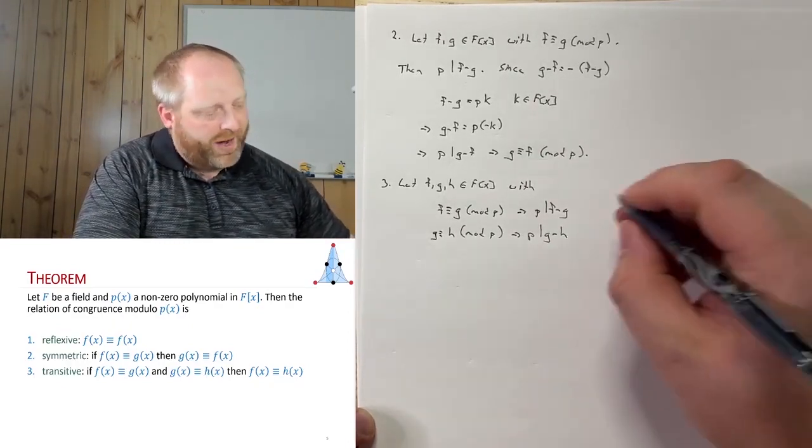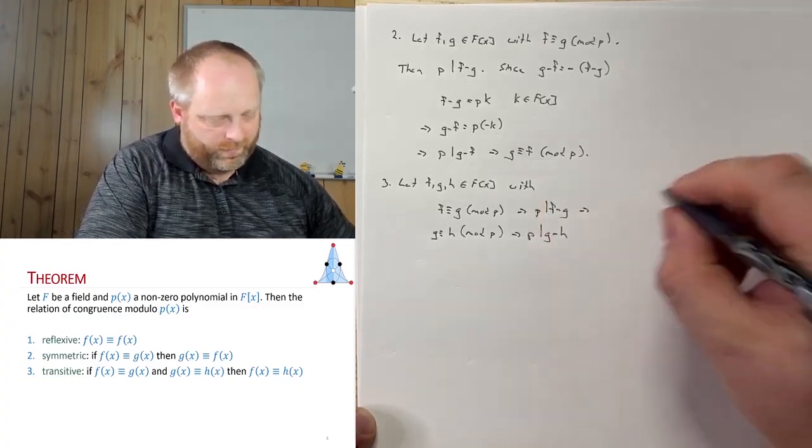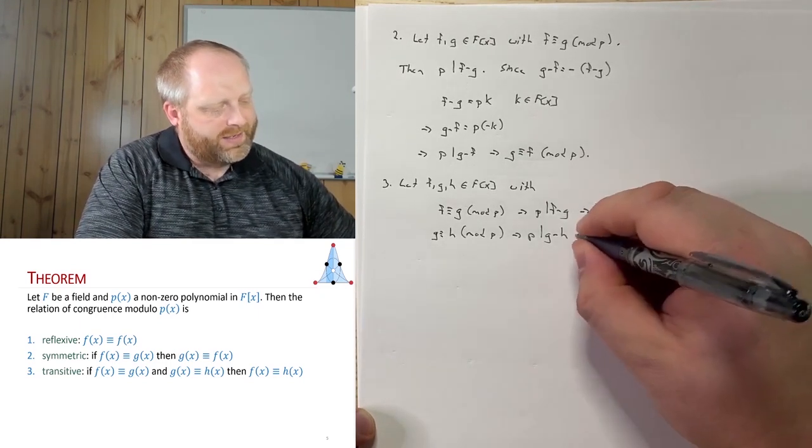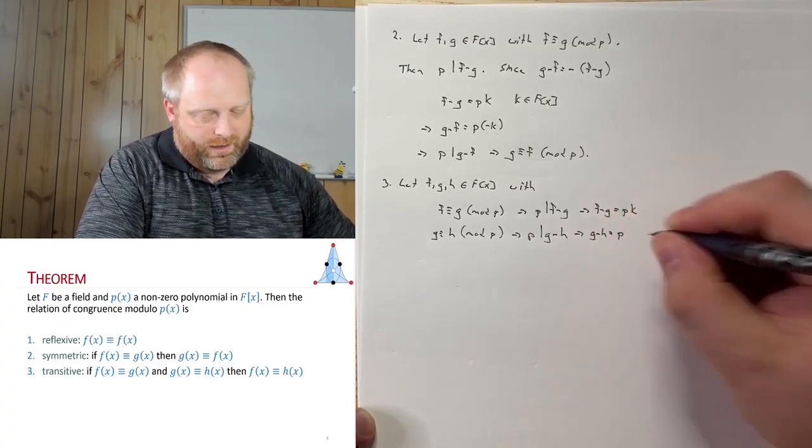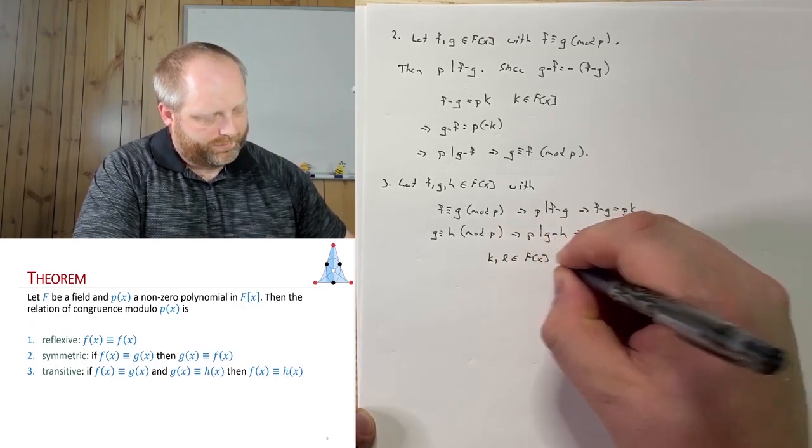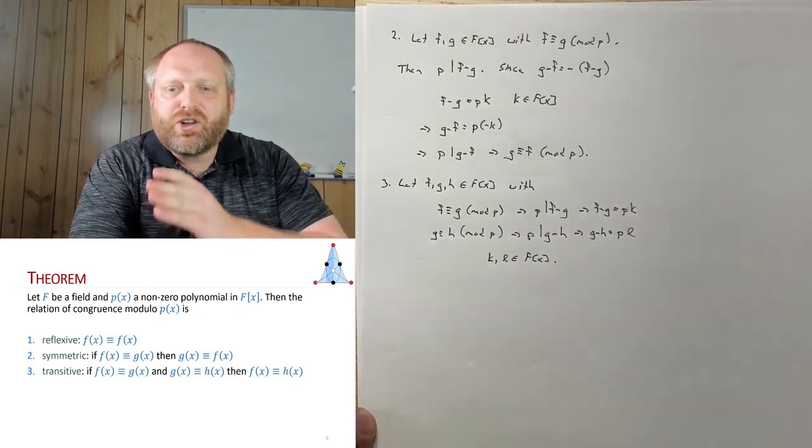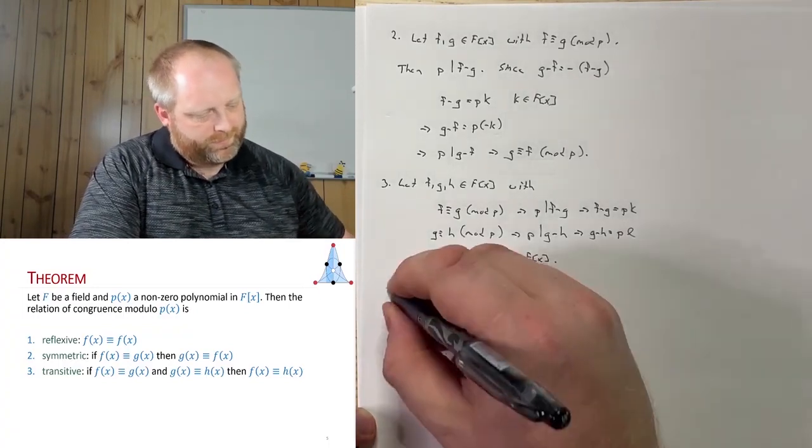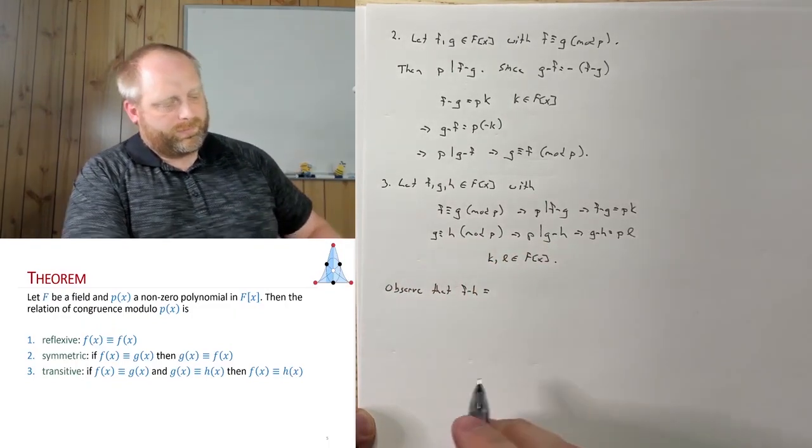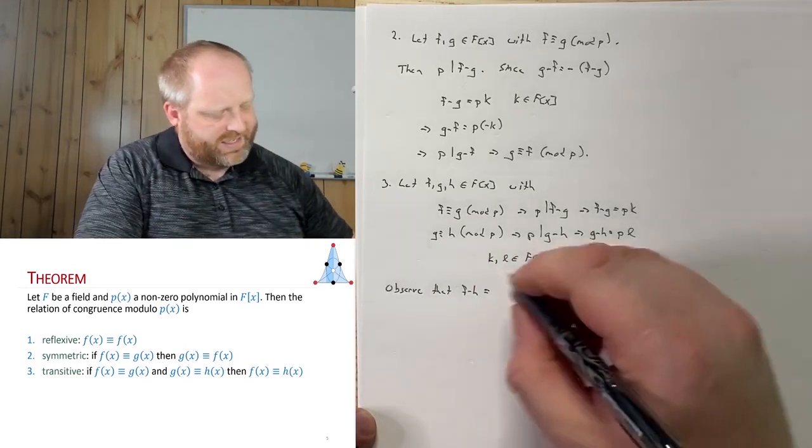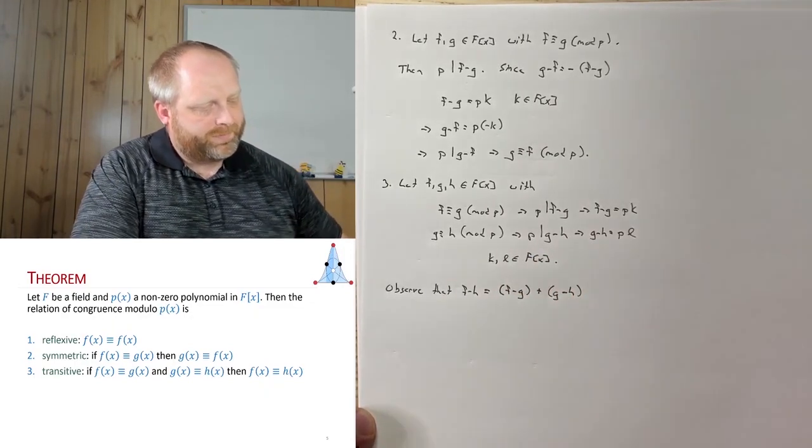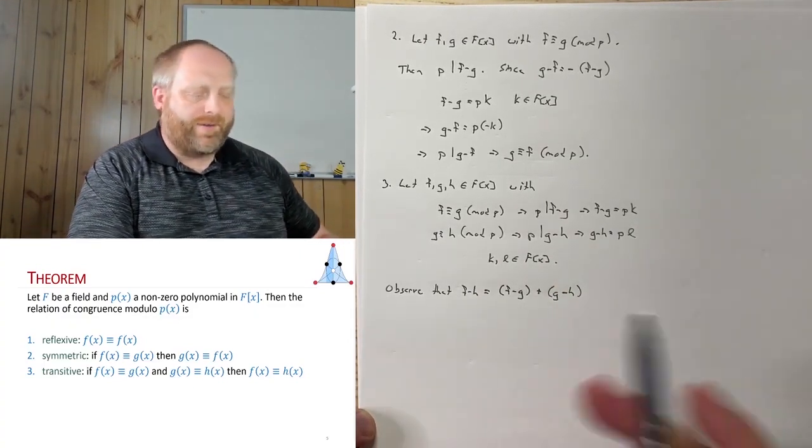Now, of course, with this, I could rewrite these as f minus g is equal to some pk, and g minus h is equal to some pl, where k and l are elements of F[x]. Then observe the following: let's look at what is f minus h. So observe that f minus h, I can write this as f minus g plus g minus h, because here when I'm doing this, my g is cancelled, so I'm just left with f and minus h.